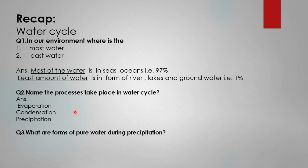During cloud formation, which process takes place? That is condensation. What is precipitation? Precipitation occurs when the clouds become too heavy due to the presence of liquid water and then this water falls on the ground. What are the forms of pure water during precipitation? Your answer will be in the form of rain and in the form of snow or sleet.